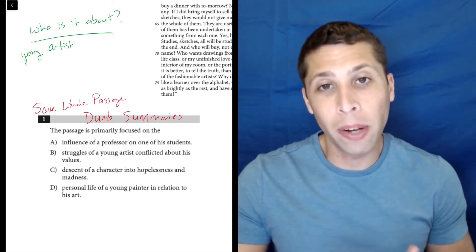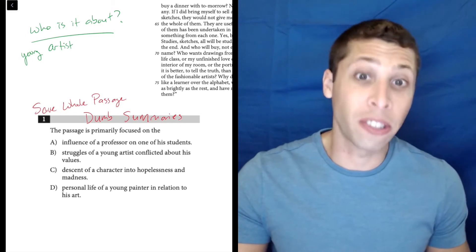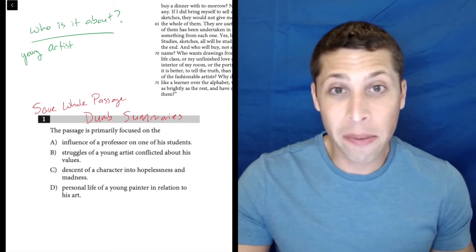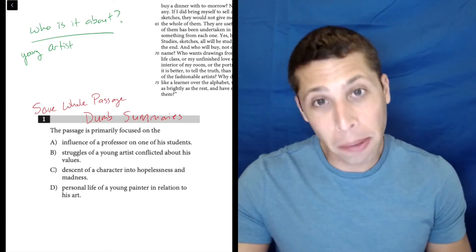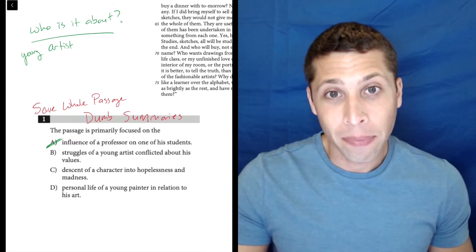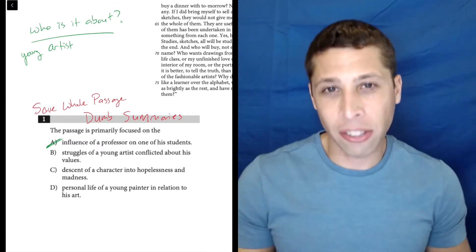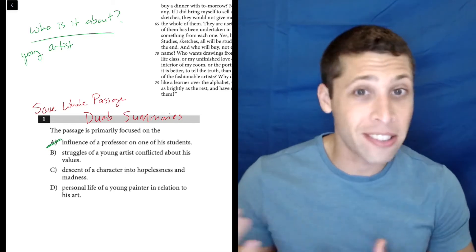Now why is that helpful? Well, if we're given these choices that are supposed to be their own summaries of the passage, and it doesn't make the young artist the main character of the choice, then it's probably not good. So that, to me, gets rid of choice A because that seems to be making the professor the main character. And it's really not about him. Yes, he's there, yes he's speaking...